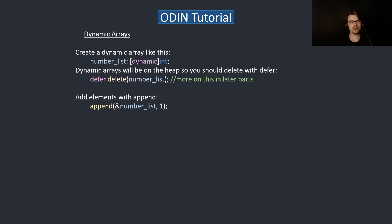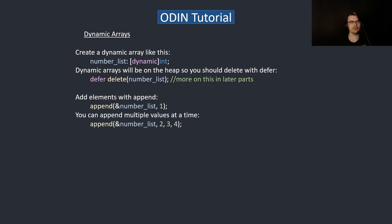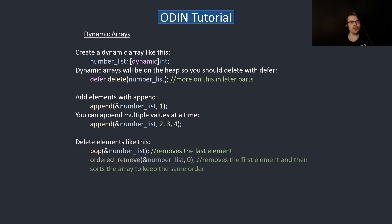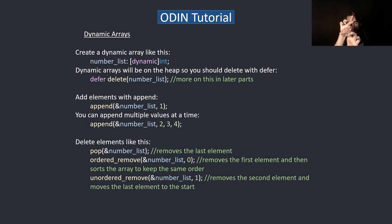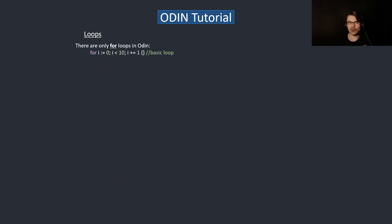We add elements using `append` — these are built-in functions. There's no OOP style in Odin; if you're using a struct you pass a reference to it in the function. You can also append multiple things at once. To delete elements, `pop` removes the last element. `ordered_remove` removes at the specified index and reorders the rest. `unordered_remove` removes the element and replaces it with the last element, so the order changes. `clear` clears everything.